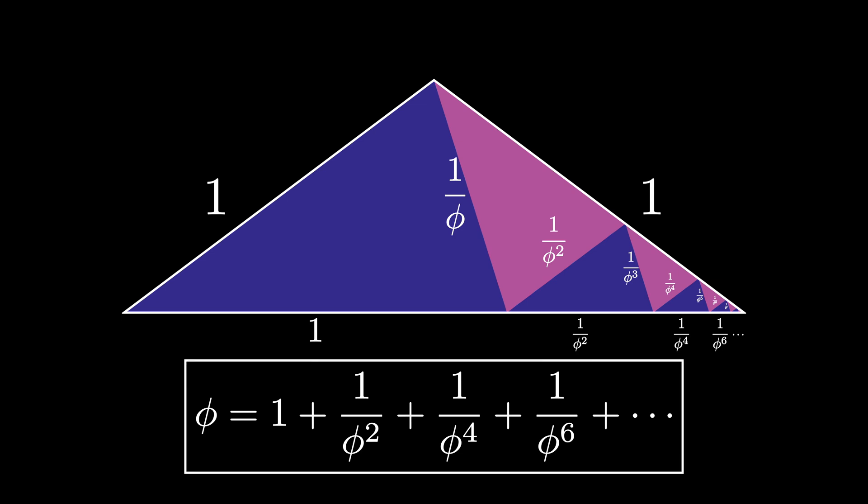But we can also get a related fact by looking at the pink shaded golden triangle sitting inside this golden gnomon. On the one hand, the side of the golden gnomon has a length of 1.